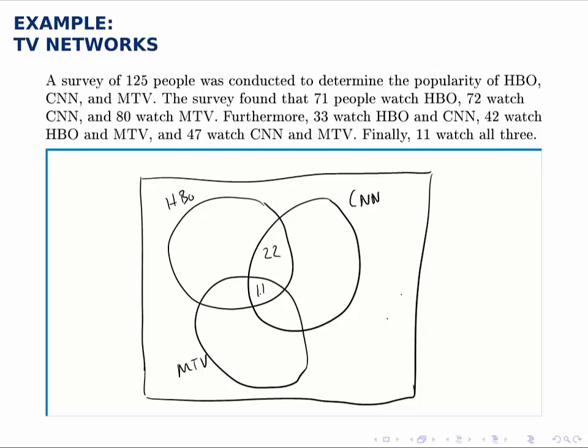But we do the other two intersections similarly. For instance, if we do CNN and MTV, that would be these 47 right here. Again, we've already counted 11 of them, so what goes here is 36. So there's a total of 47 in that intersection. So we got 36 by taking 47 that we wanted minus the 11 we'd already counted. Just like to get the 22, we took 33 minus 11.